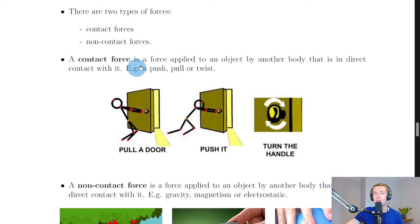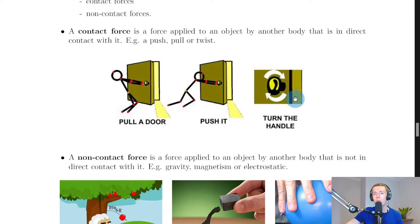A contact force is a force applied to an object by another body that is in direct contact with it. For example, a push, pull, or twist. These are the three most common types of contact forces. Let's say you're pulling a door, pushing a door shut, or turning the handle on a door. Another twist action might be getting the lid off a bottle.